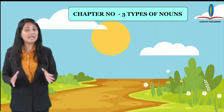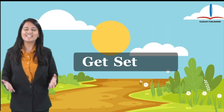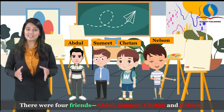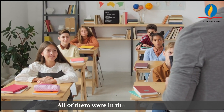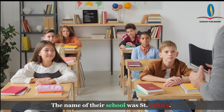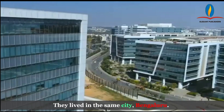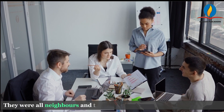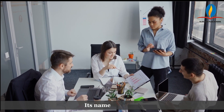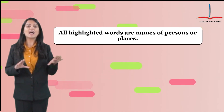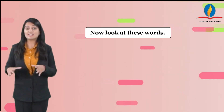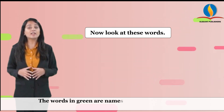Chapter number three: Types of Nouns. There were four friends — Abdul, Sumit, Chetan, and Nelson. All highlighted words are names of persons or places. Now look at these words — the words in green are names of any person or a place.